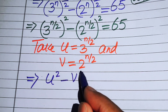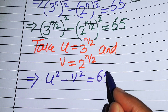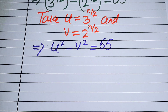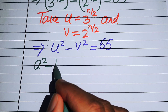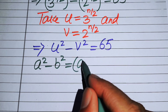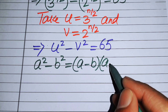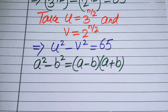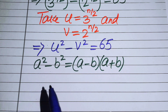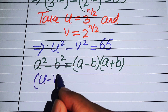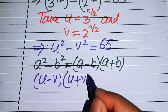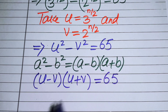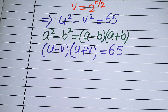Substituting, we get u squared minus v squared equals 65. Now we apply the difference of squares identity: a squared minus b squared equals a minus b times a plus b. Using this identity, the equation becomes u minus v times u plus v equals 65.